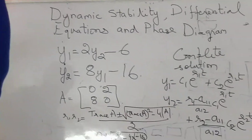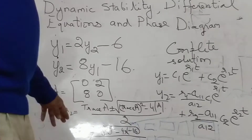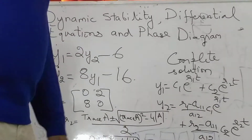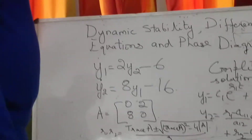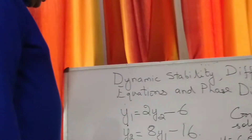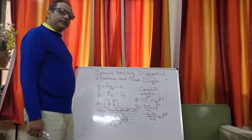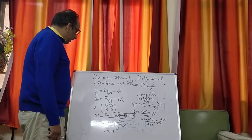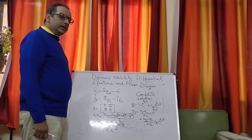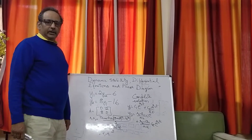One can always find the characteristic roots, which work out to be 4 and minus 4. Now, we have learned in our earlier classes that if the characteristic roots are real and distinct, there are three possibilities.